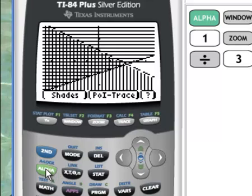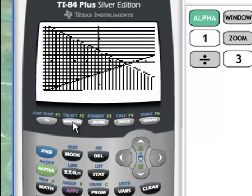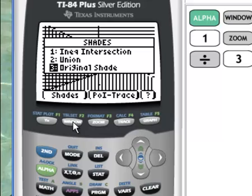And if we use alpha and then either F1 or F2, we can select the option we'd like to see. So we can shade the inequality. Right now we have the original shade option three. We can look at the intersection, the union, or the original. And I'd like to look at the intersection.